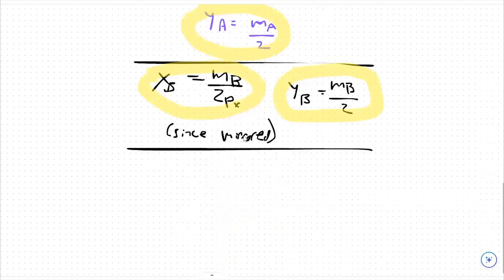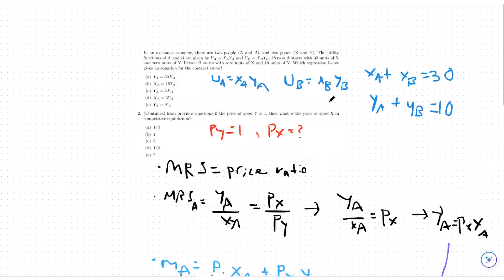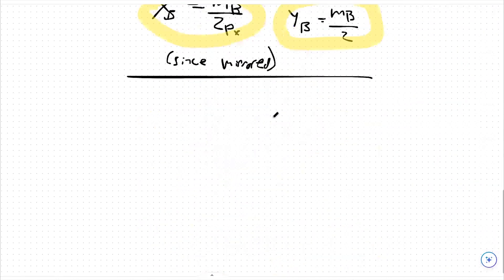So from there, we're going to pull back all the way up to this equation here, xA plus xB equals 30. I'm going to rewrite that down here.